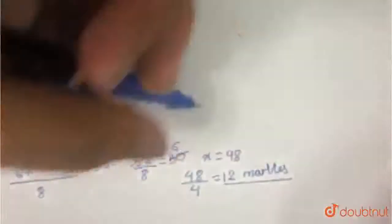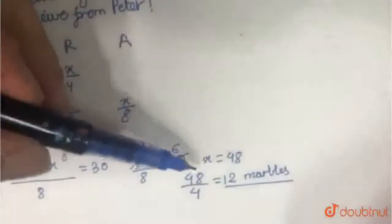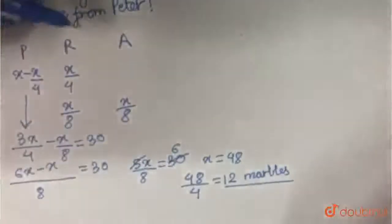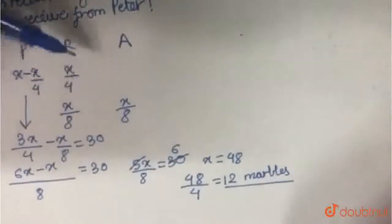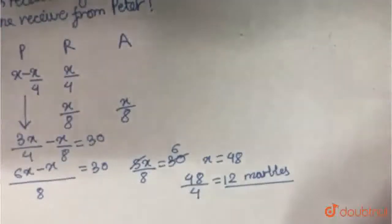So 12 marbles is our answer, which is 48 upon 4 or X upon 4. Because Ren received X by 4 marbles from Peter. Thank you.